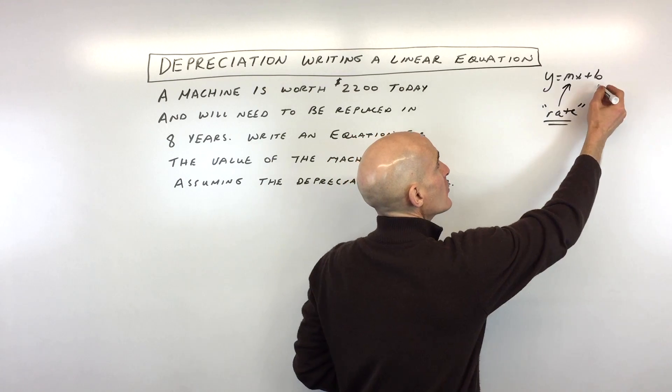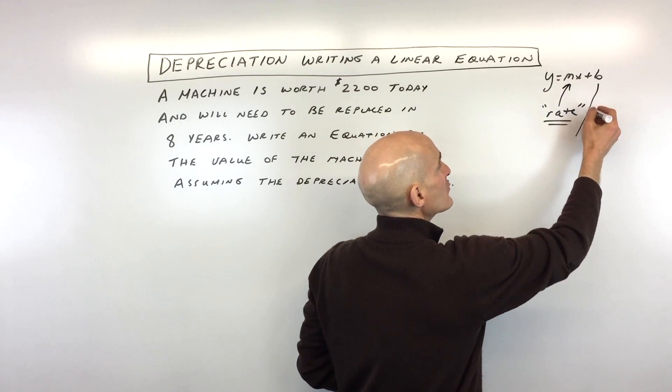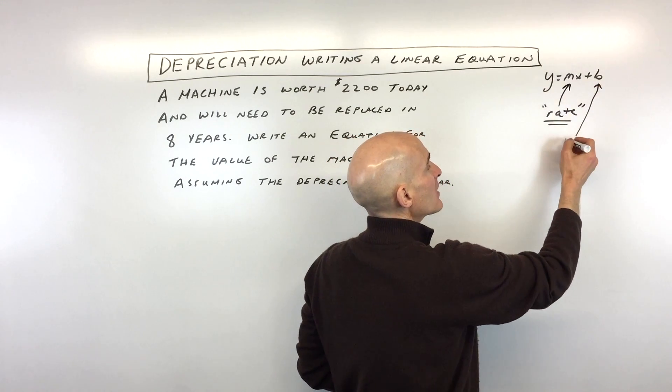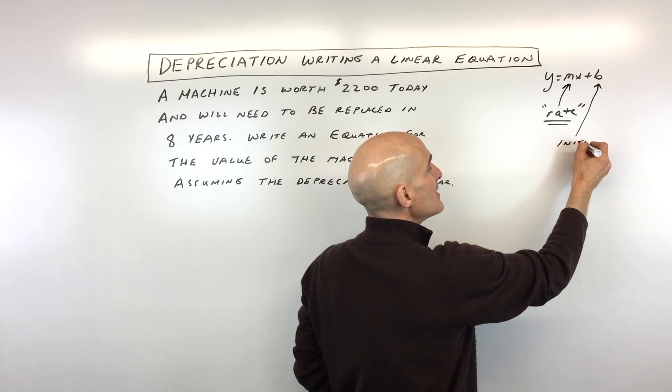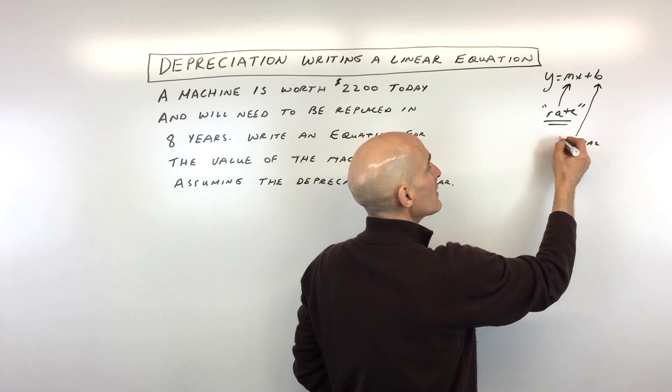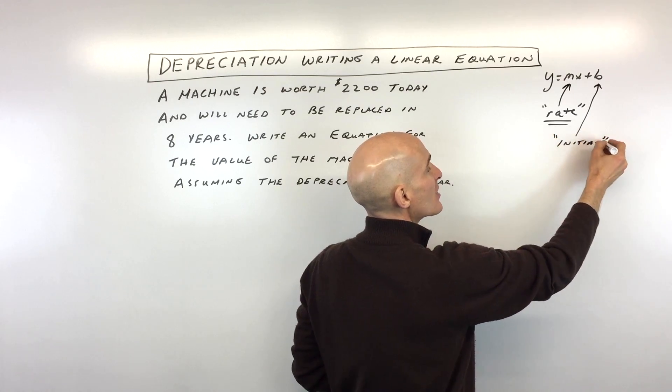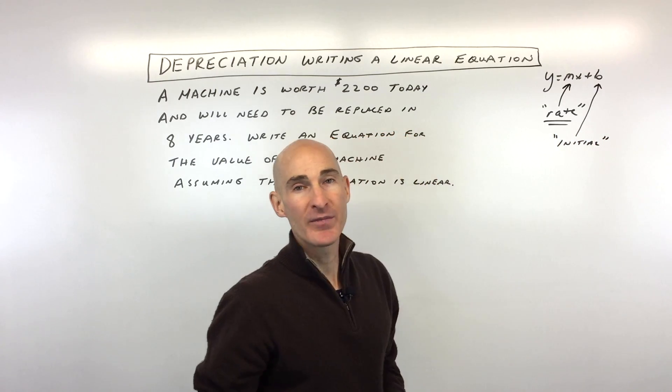The b value is our y-intercept, but in a story problem you want to think of that as the initial condition or the starting value.